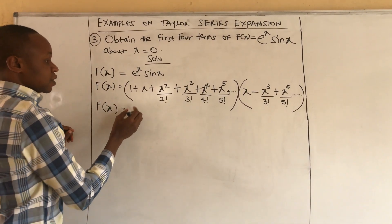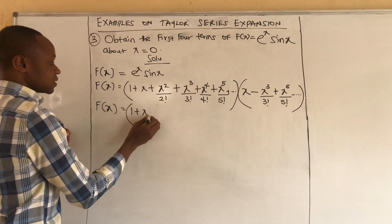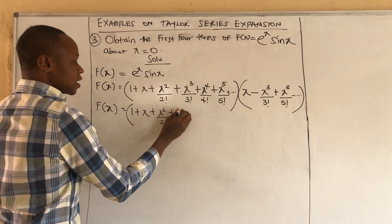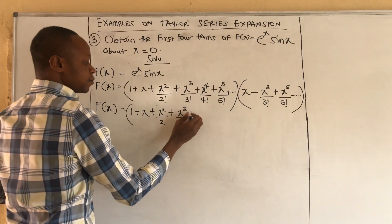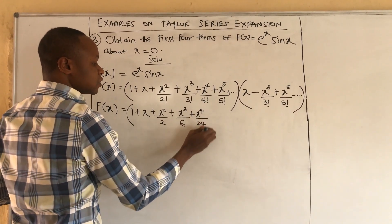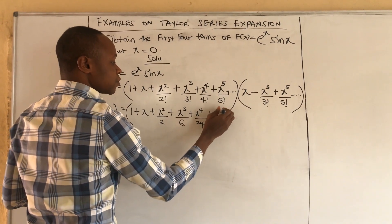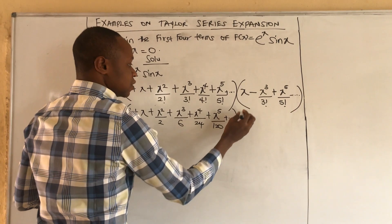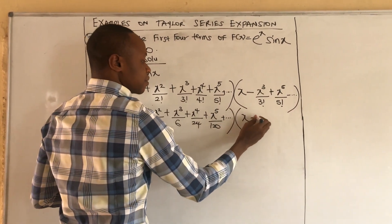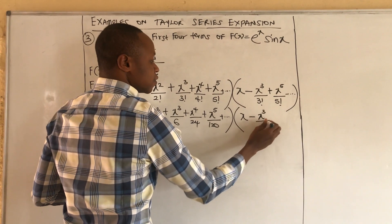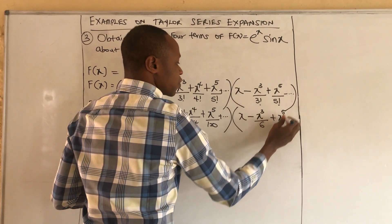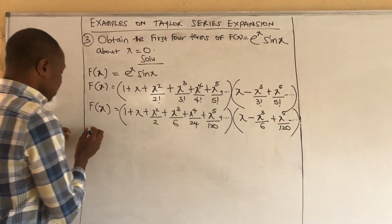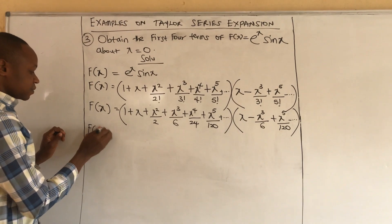That gives us (1 + x + x²/2 + x³/6 + x⁴/24 + x⁵/120 + other terms) multiplied by (x − x³/6 + x⁵/120 + other terms). Now we carefully expand this according to like powers of x.